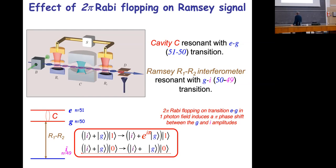If you have one photon in the cavity, level i does not change because it is not resonant, but |g,1⟩ becomes −|g,1⟩ — you have an e^{iπ} phase shift. On the other hand, if you have zero photons in the cavity, |i,0⟩ does not change and |g,0⟩ does not change because the ground state is not affected. So in the end: if you have one photon in the cavity, the superposition |i⟩+|g⟩ becomes |i⟩−|g⟩, and if you have zero photons it stays as |i⟩+|g⟩. You have a pi phase shift conditioned on the presence of one photon in the cavity.